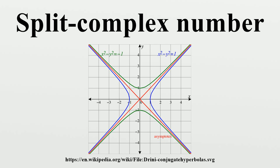The hyperbola and conjugate hyperbola are separated by two diagonal asymptotes which form the set of null elements. These two lines are perpendicular in R² and have slopes plus or minus 1.